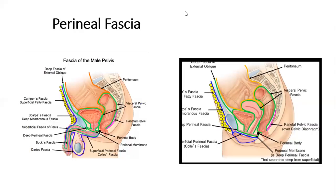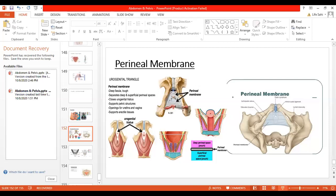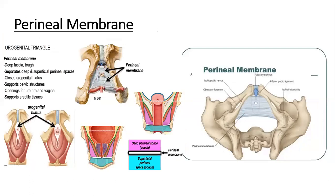The deep perineal fascia is also called investing fascia, or Gallaudet's fascia. It is present within the perineal region in the form of the perineal membrane. It closely invests and covers the ischiocavernosus, bulbospongiosus, and superficial transverse perineal muscles, which will be studied in detail. It is also attached laterally to the ischiopubic ramus. Anteriorly, it fuses with the suspensory ligament of the penis and continues with the deep fascia covering the external oblique.